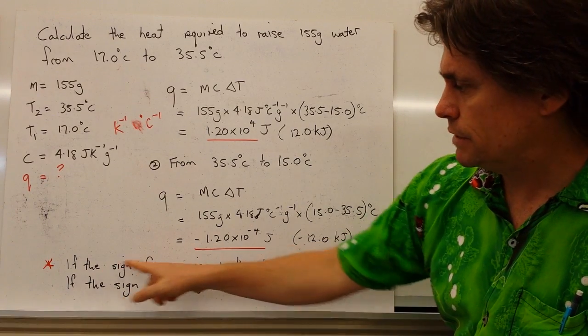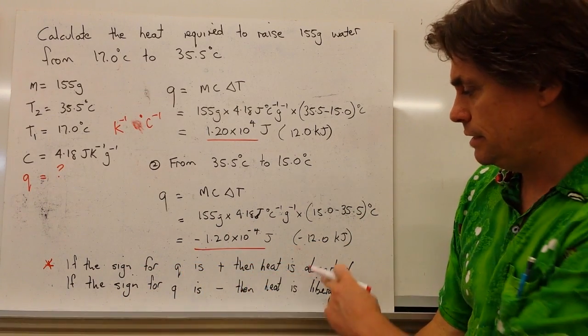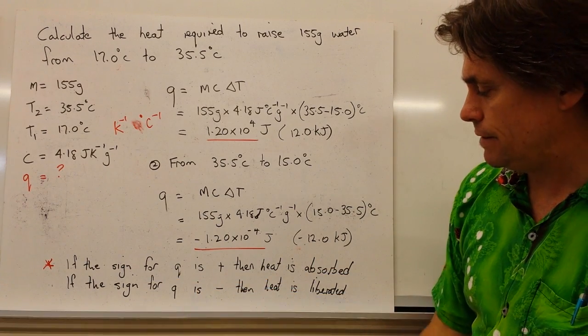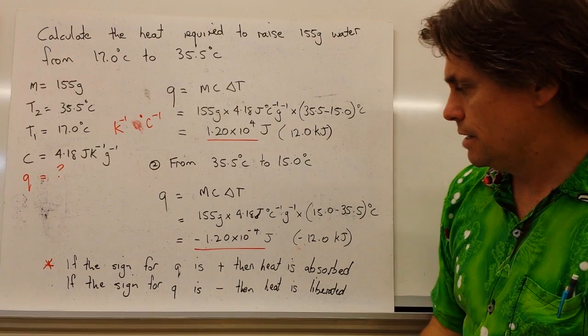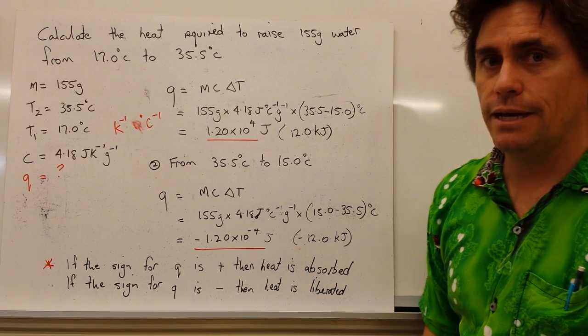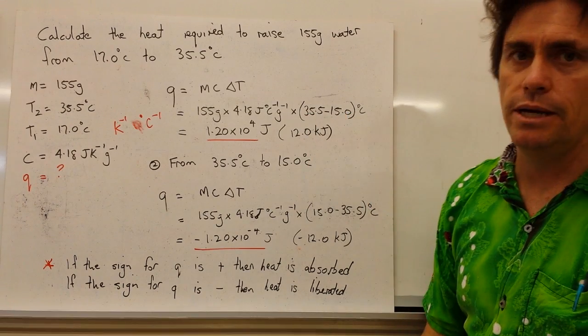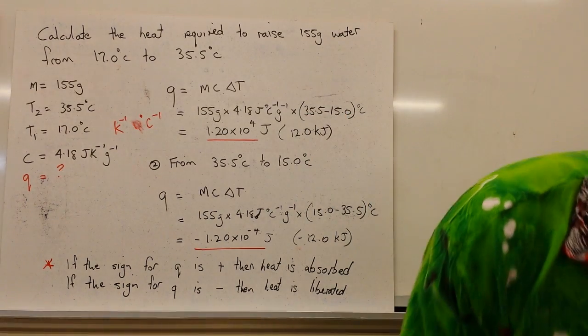Well, if the sign for Q is positive, then heat is absorbed. If the sign for Q is negative, then heat is liberated. So we've got to make sure we get that sign right, and it comes down to what we put as T2 and T1.